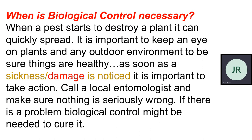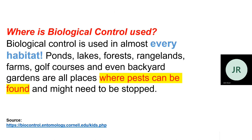When is biological control necessary? When the damage is noticeable and it is becoming out of control. During this condition, it is very much essential that you should have some control. Where is biological control used? Wherever pest can be found — every habitat: it may be forest, lake, farming lands, or any other land.